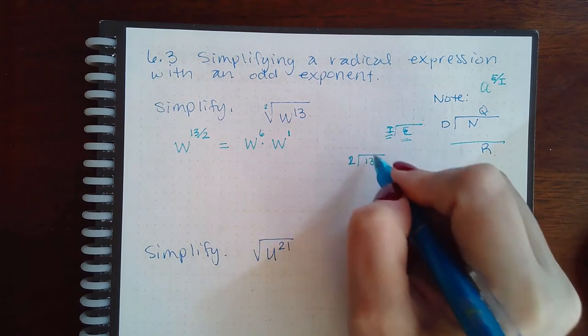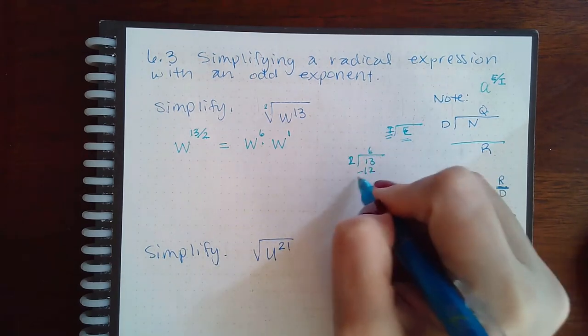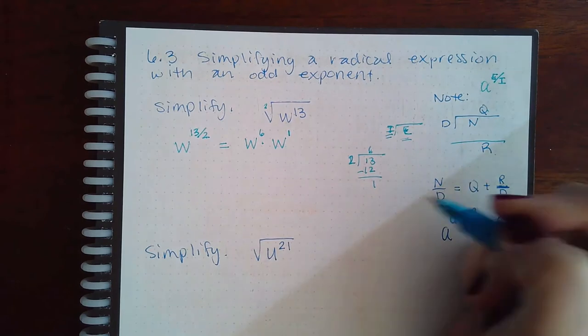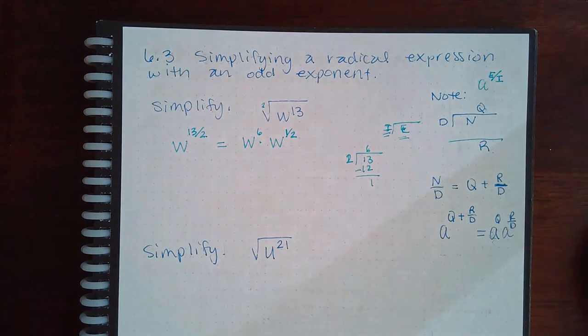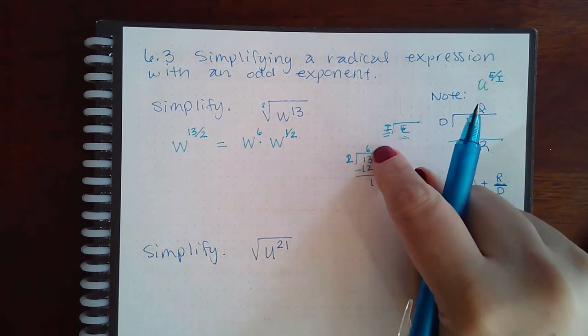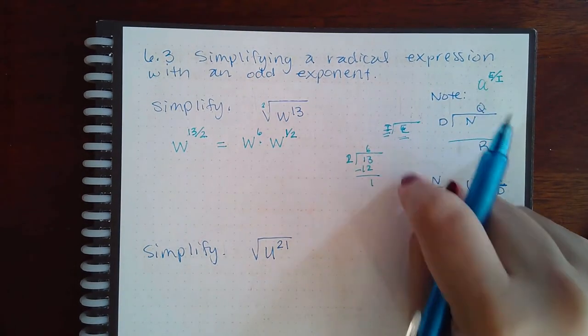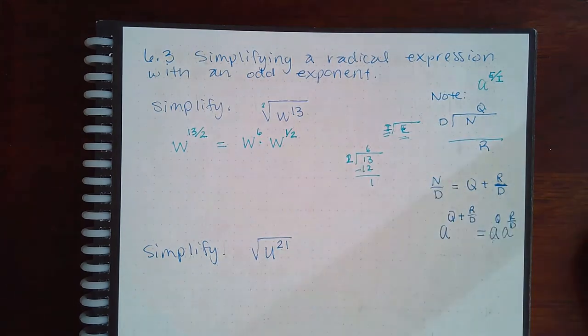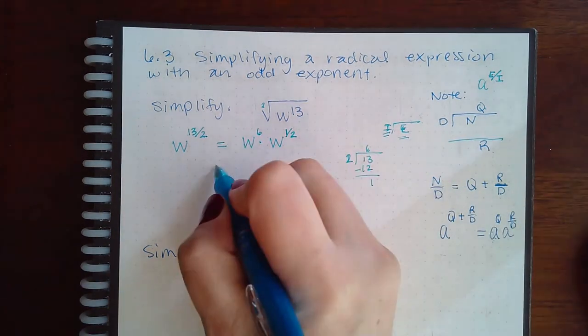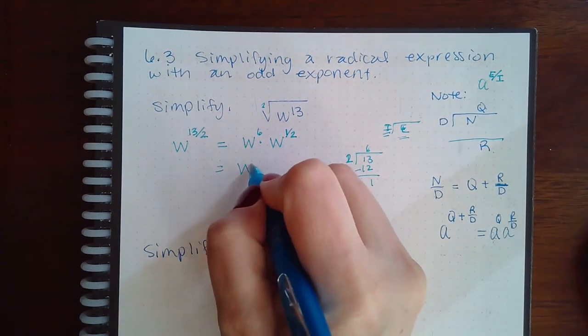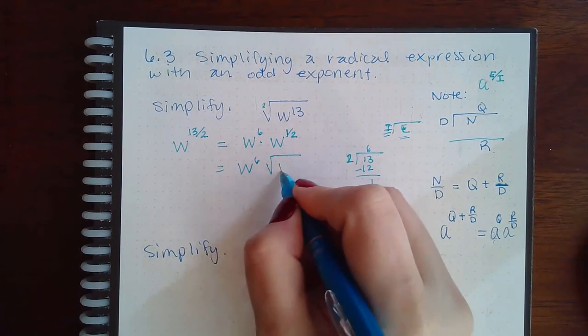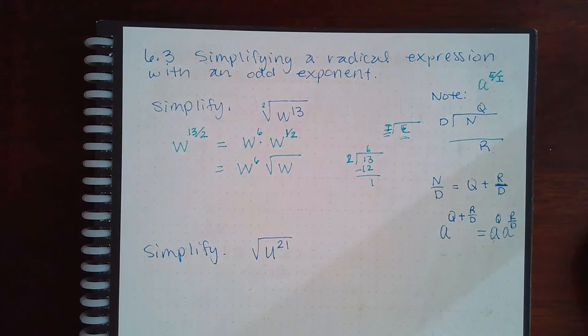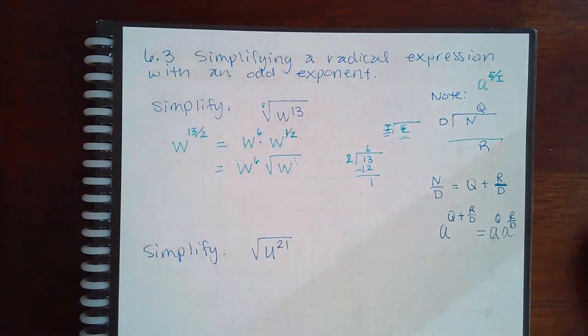Two into 13 is six times which is only 12, so I have one left over. The one left over has to be written as a fraction. It went in six whole times but I still have one out of two left over. This becomes w to the sixth and then in square root form w to the first power. You don't need to write the one when it's a first power.